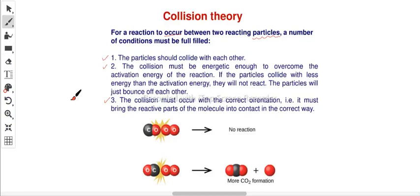The first point: the particles should collide with each other. When the particles of reactants collide, this may cause a chemical reaction. The second point: the collision must be energetic enough to overcome the activation energy of the reaction. If the particles collide with less energy than the activation energy, they will not react — the particles will just bounce off each other. This energy should be equal to the activation energy or higher.